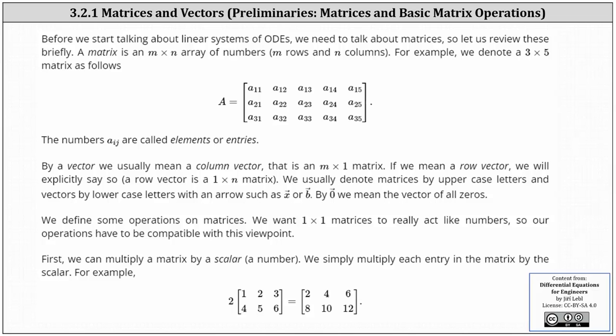Again, it's a three by five matrix because the matrix has three rows - one, two, three - and five columns - one, two, three, four, five.